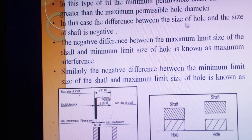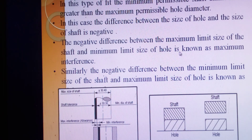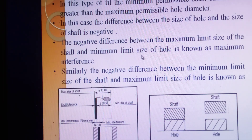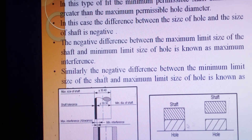In interference fit, the difference between the size of the hole and the shaft is negative. The difference between the maximum limit of size of the shaft and the minimum limit of the hole is known as maximum interference. Here you can see that the shaft and hole sizes overlap — the shaft size is greater than the hole size.